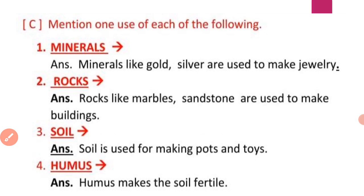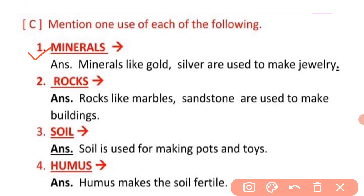Now see the next part: mention one use of each of the following. Minerals — minerals like gold and silver are used to make jewelry. Rocks — rocks like marble and sandstone are used to make buildings. Soil — soil is used for making pots and toys.